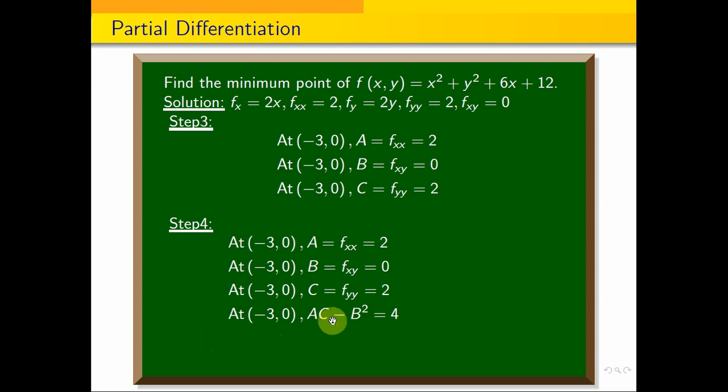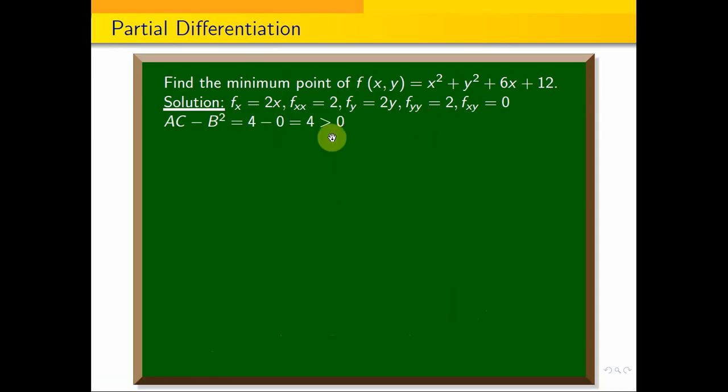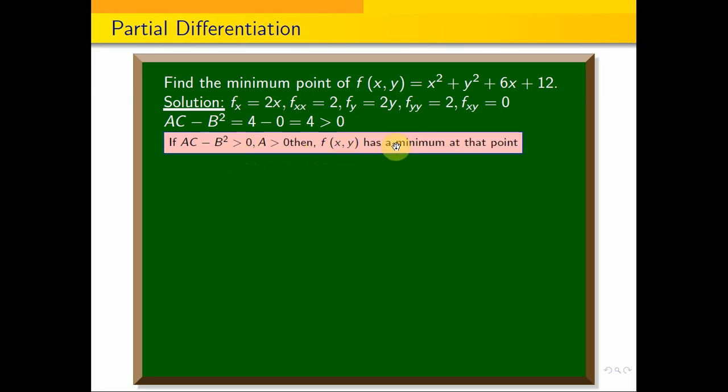AC - B² = 2 × 2 - 0 = 4, which is greater than 0. Since AC - B² > 0 and A > 0, the point (-3, 0) is a minimum point and the minimum value of the function.